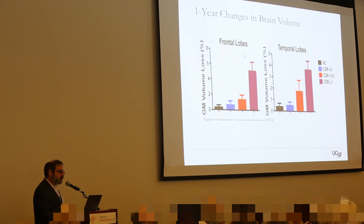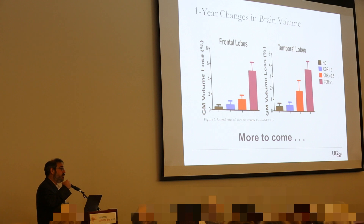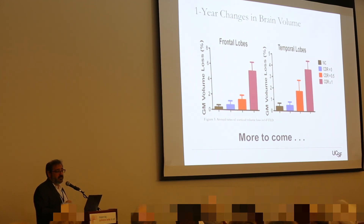We already see evidence that some of our expectations are detectable. For example, this graph shows how much the frontal lobes change depending on whether you have symptoms or not, divided into four groups. The black bar represents people who don't carry the gene - that's how much their brain shrinks in a year. Then there are people who carry the gene but have no detectable symptoms, people with very mild symptoms, and people with more easily detected symptoms. You can see that the model I laid out appears to be true - we're starting to see differences in rates of change even over the course of a year, depending on stage of illness. That's a taste of the data coming from these studies, and we expect much more over time.